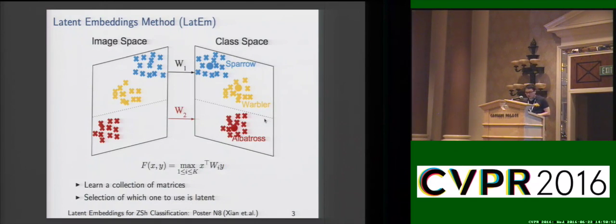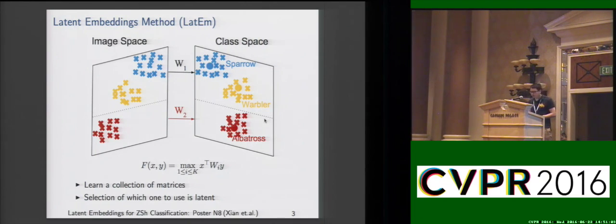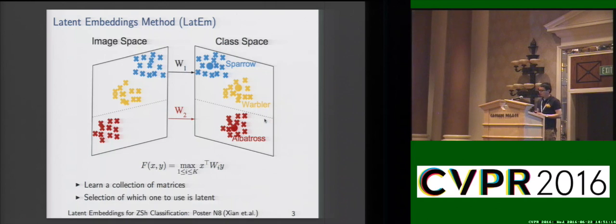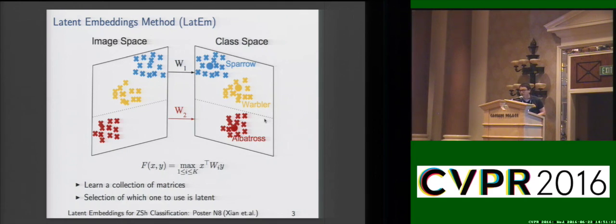Therefore, in this work, we propose the latent embedding model, which learns a piecewise linear compatibility function. It learns a collection of matrices with the selection of which one to use as a latent variable. Intuitively, each embedding matrix in our model is responsible for object classes with similar visual characteristics, and factorizes the complicated classification problem into easier ones.